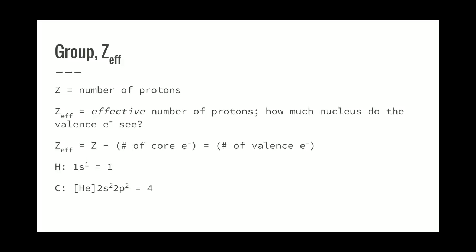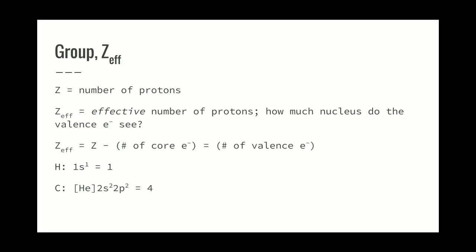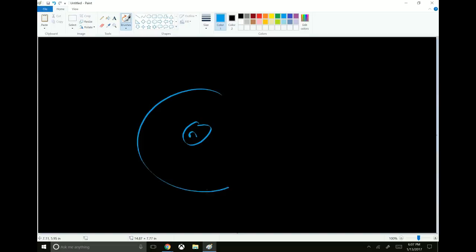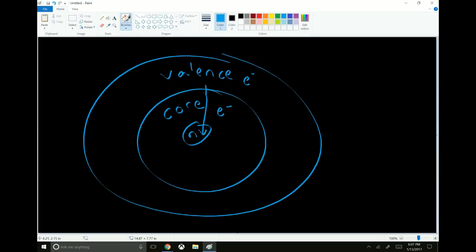Now, to help us understand some of the later trends, we're going to talk about effective nuclear charge. Z is the number that we use to represent the number of protons in the element. Z effective is the effective number of protons - how much of the nucleus do your valence electrons see? The core electrons are in between the valence and the nucleus, so they act as a shield blocking some, but not all, of the nuclear pull.